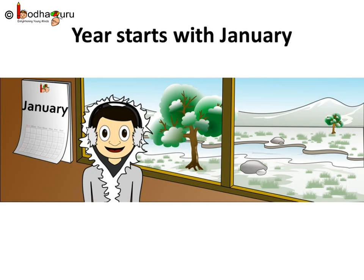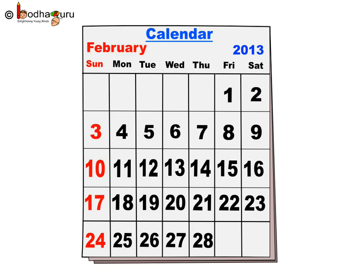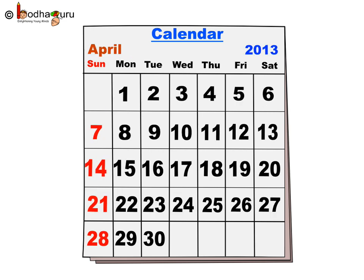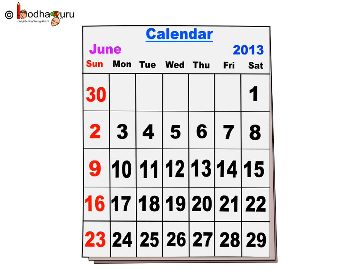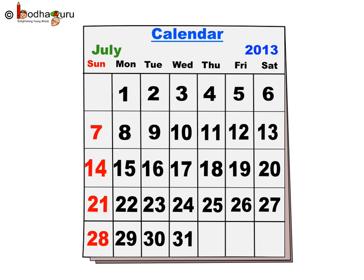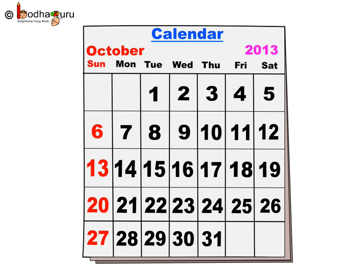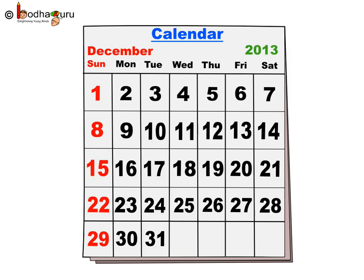Let us see again what months make a year, starting from the beginning. January is the first month, February the second, March the third, April the fourth, May the fifth, June the sixth, July the seventh, August the eighth, September the ninth, October the tenth, November the eleventh, and December the twelfth. December is the last month of the year.